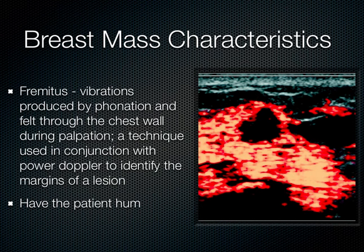There's another concept called fremitus. Fremitus is where the patient hums while you do power flow Doppler. When the patient hums, vibrations occur that can be felt through the chest wall during palpation. On power Doppler, everything lights up with fremitus — except where the mass is. This is a way to localize a mass using power Doppler by having the patient hum.